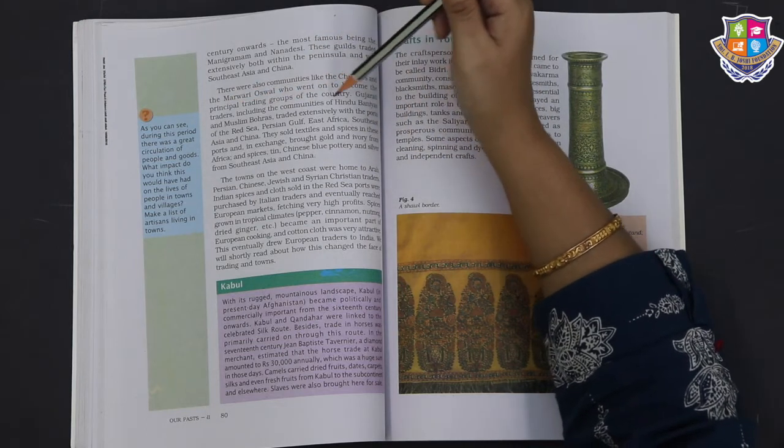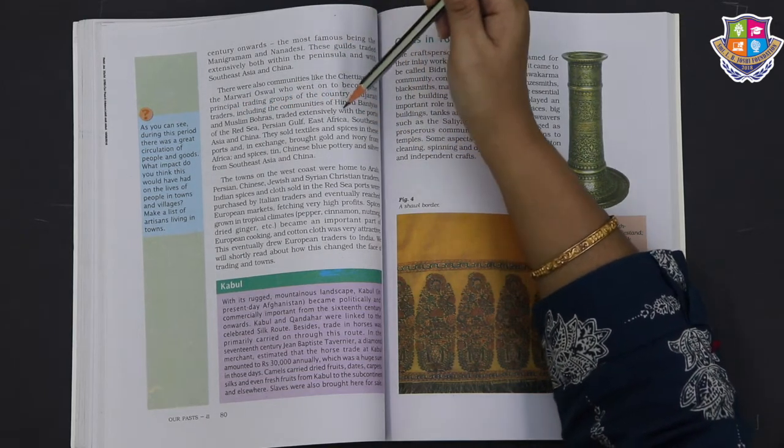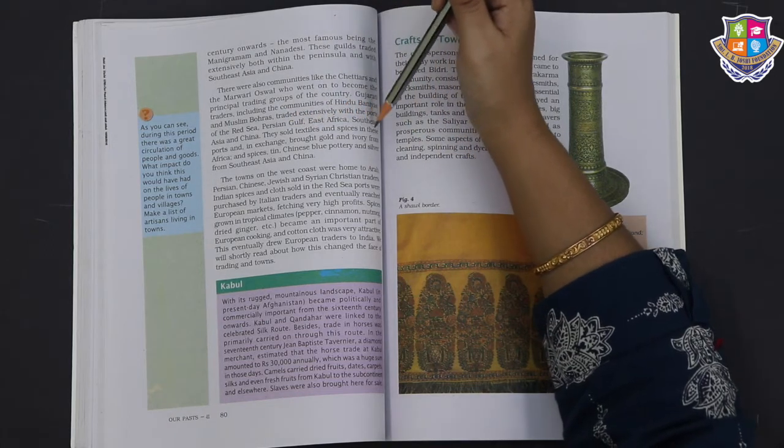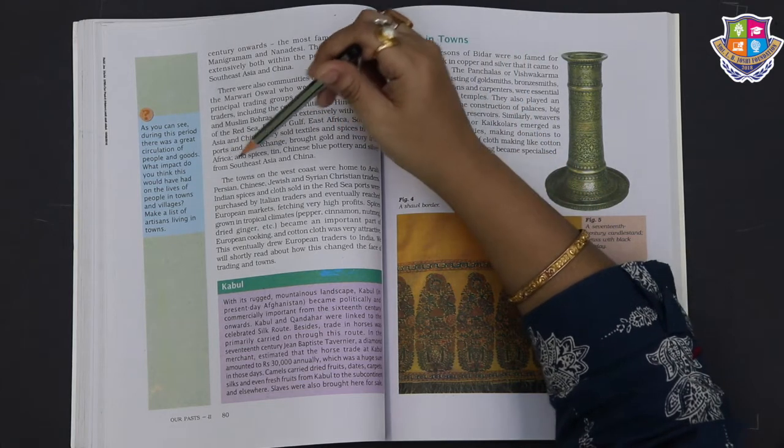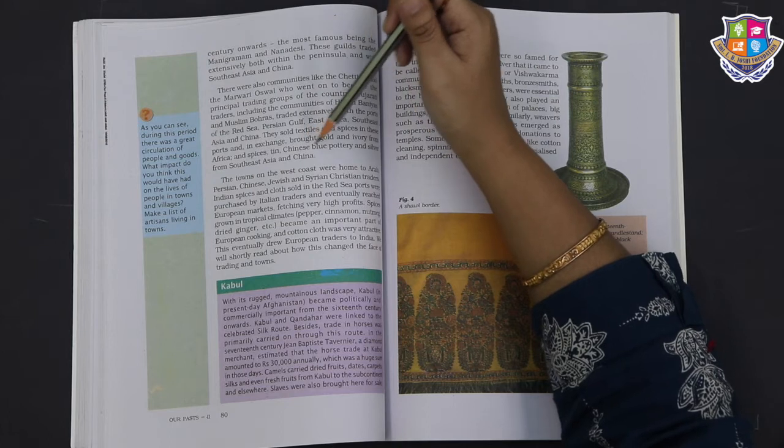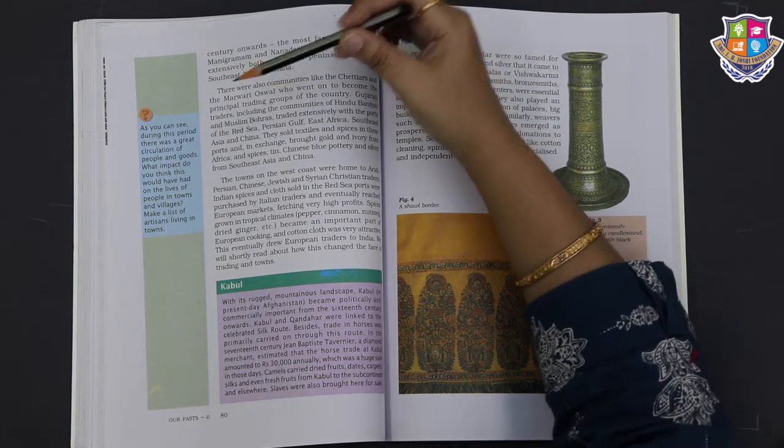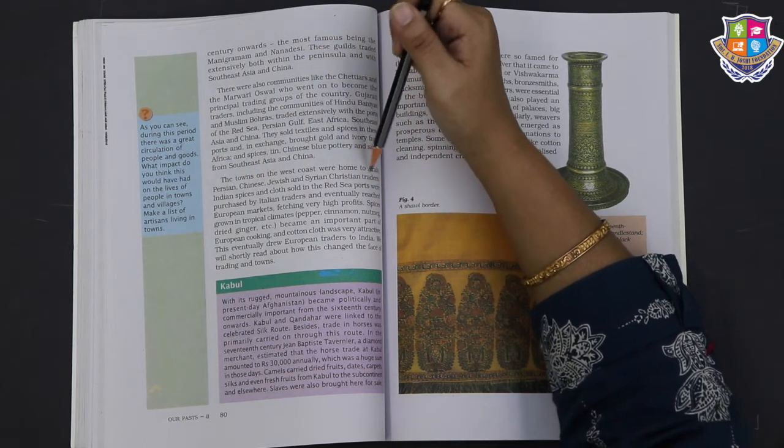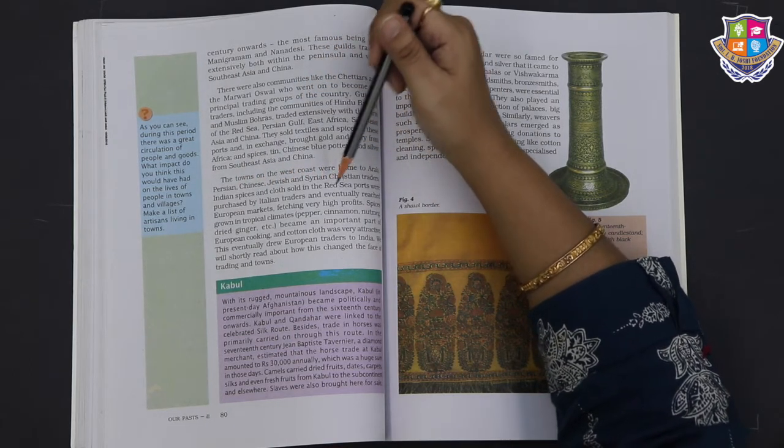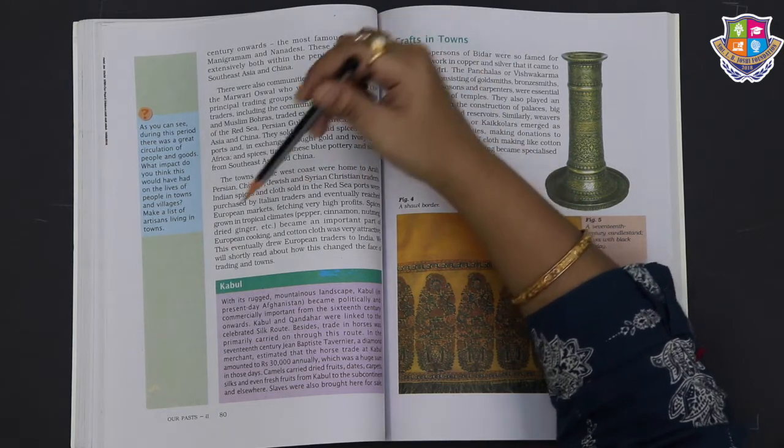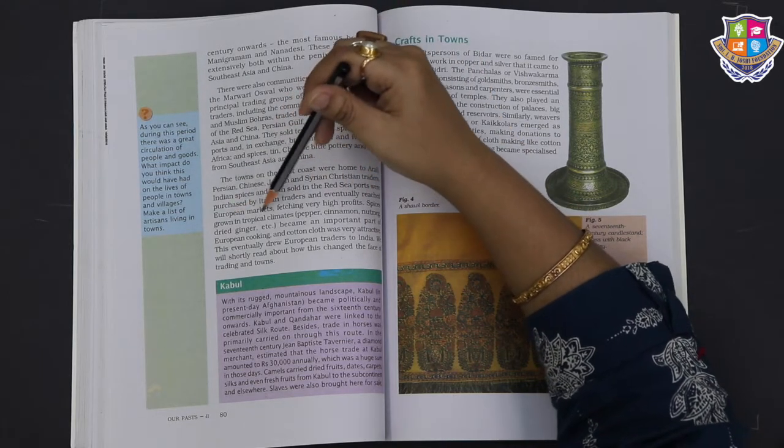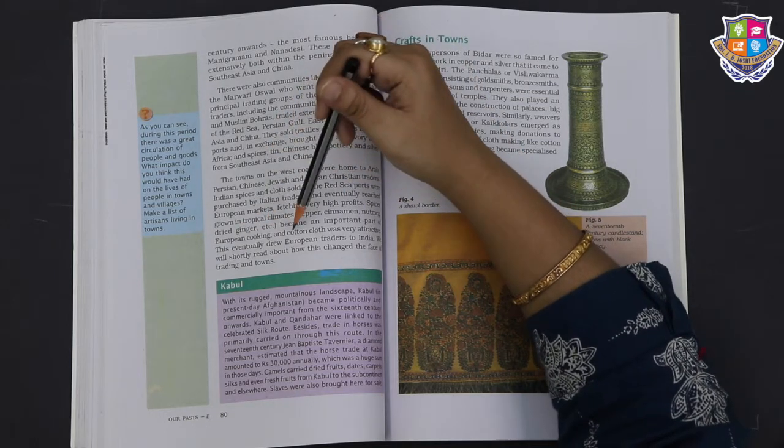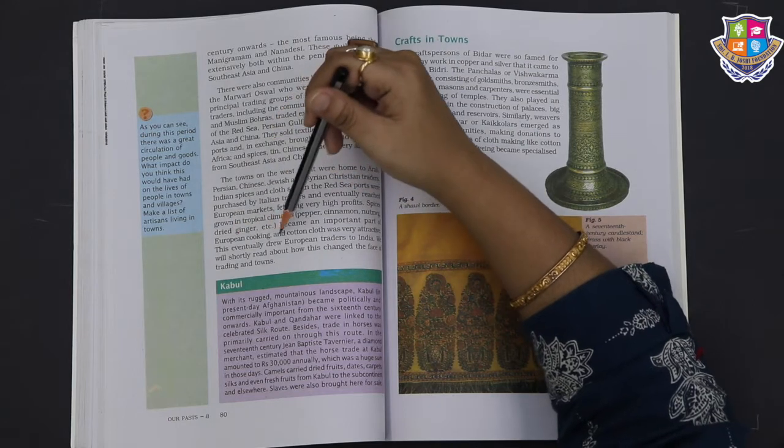There were also communities like the Chettiars and the Marwari Oswals who went on to become the principal trading groups of the country. Gujarati traders, including the communities of Hindu Baniyas and Muslim Bohras, traded extensively with the ports of the Red Sea, Persian Gulf, East Africa, Southeast Asia and China. They sold textiles and spices in these ports and in exchange brought gold and ivory from Africa, and spices, tin, Chinese blue pottery and silver from Southeast Asia and China. The towns on the west coast were home to Arab, Persian, Chinese, Jewish and Syrian Christian traders.